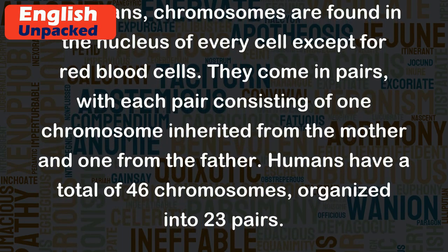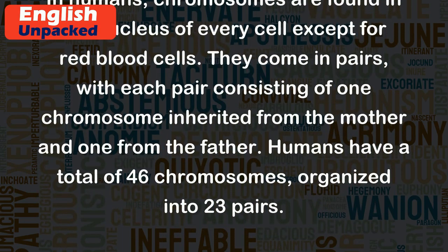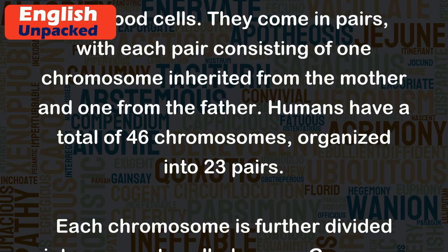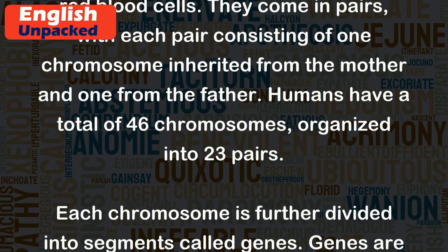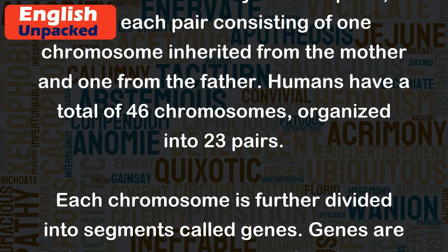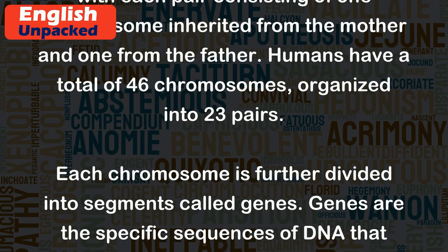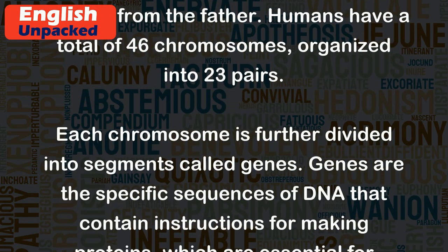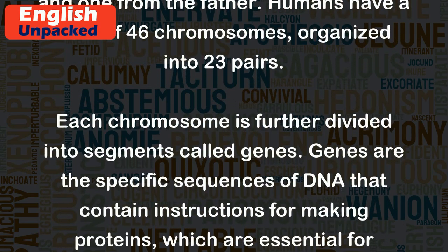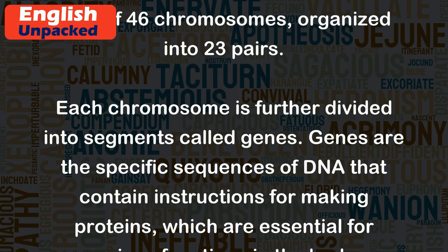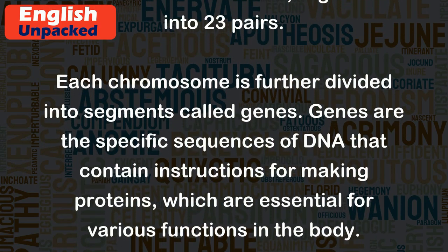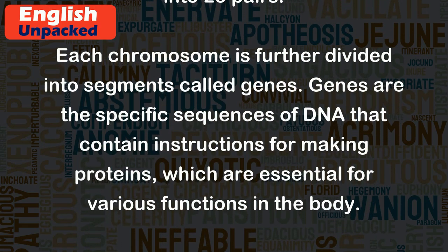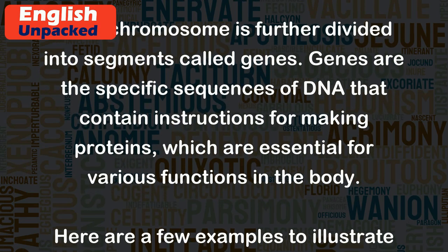Humans have a total of 46 chromosomes, organized into 23 pairs. Each chromosome is further divided into segments called genes. Genes are the specific sequences of DNA that contain instructions for making proteins, which are essential for various functions in the body.